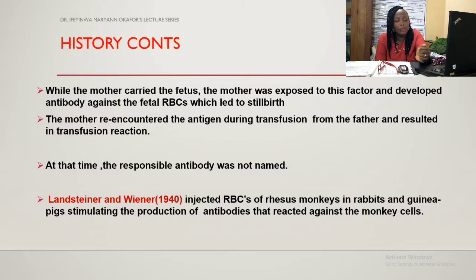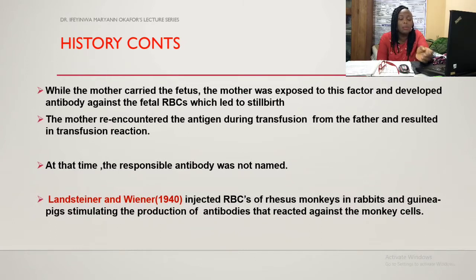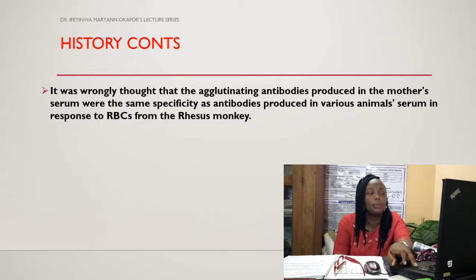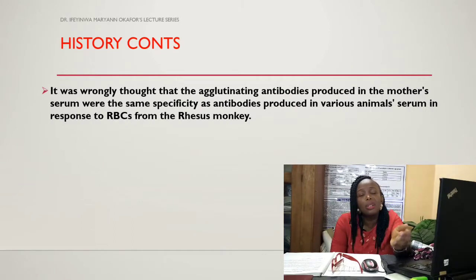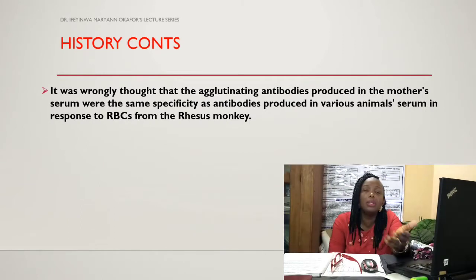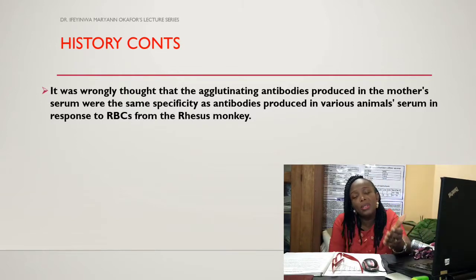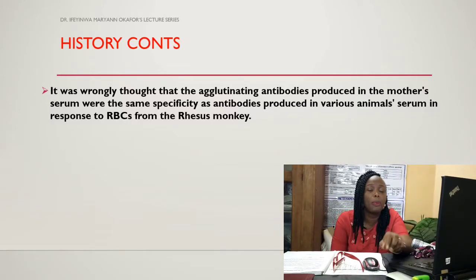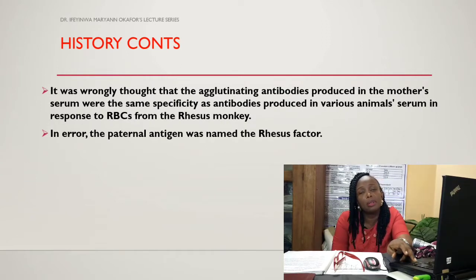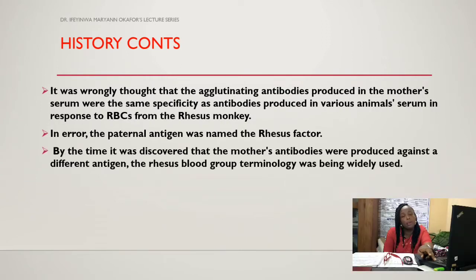While the mother carried the fetus, she was exposed to this factor and developed antibodies against the fetus's red blood cells, which led to the stillbirth. When the woman re-encountered this antigen during transfusion from the husband, it resulted in a blood transfusion reaction. This particular factor was previously not named. Landsteiner and Wiener in 1940 injected red blood cells of rhesus monkeys into rabbits and guinea pigs, stimulating production of antibodies that reacted against the monkey cells. It was wrongly thought that the agglutinating antibodies found in the mother's serum were the same as those described by Landsteiner's group, and because of that the antibody was named rhesus antibody and the antigen called rhesus antigen.